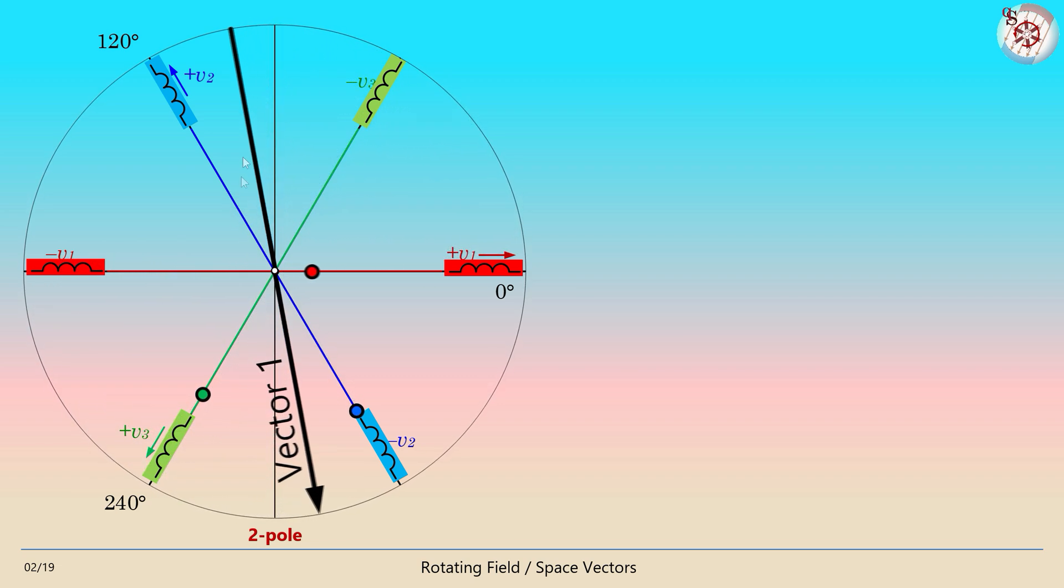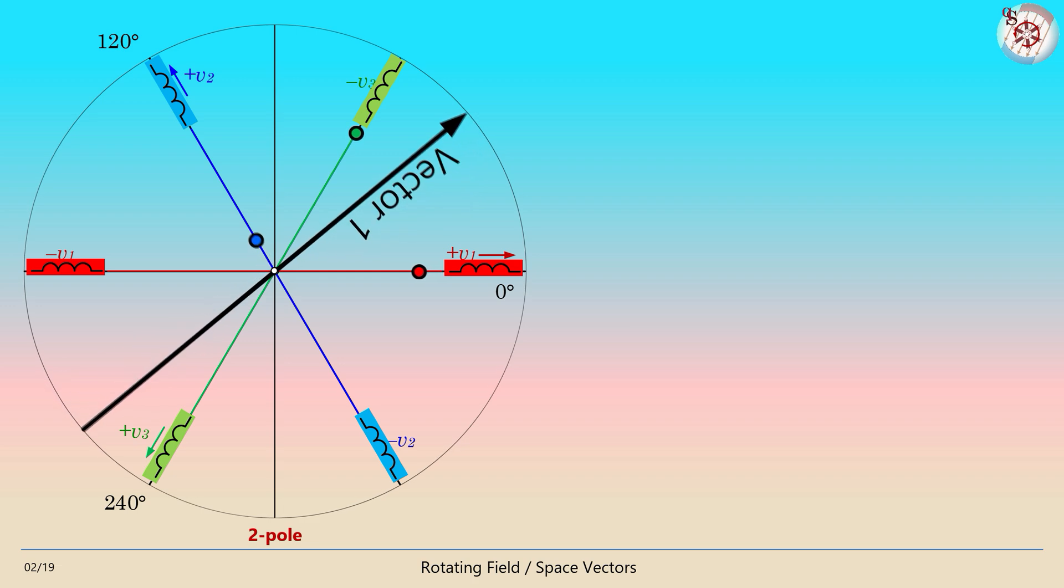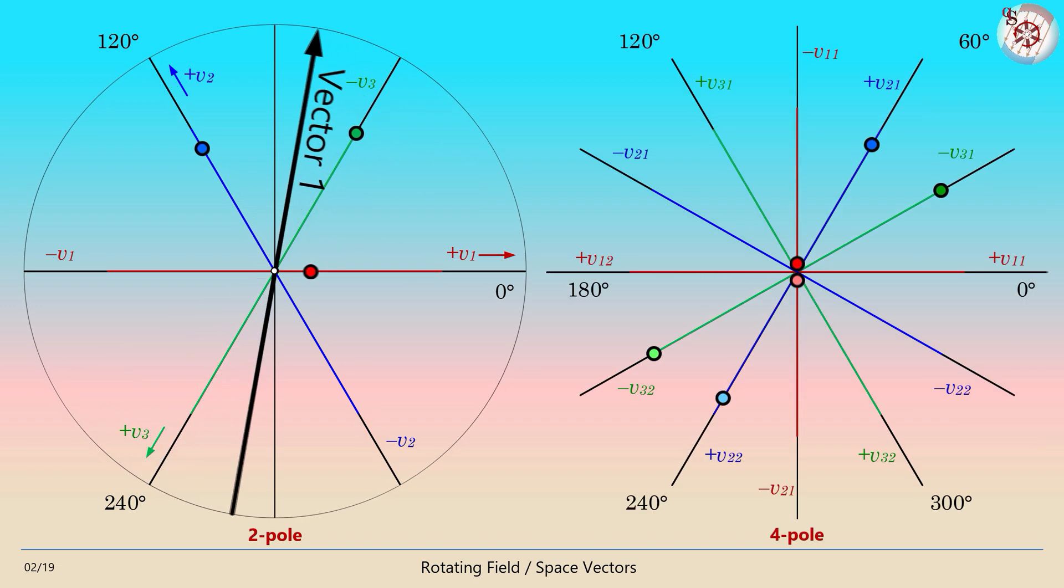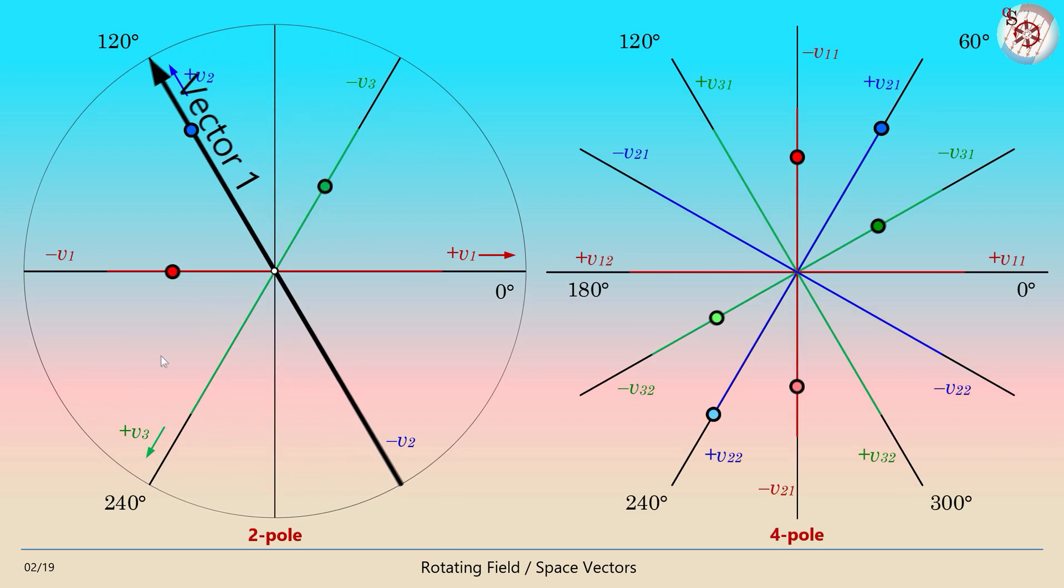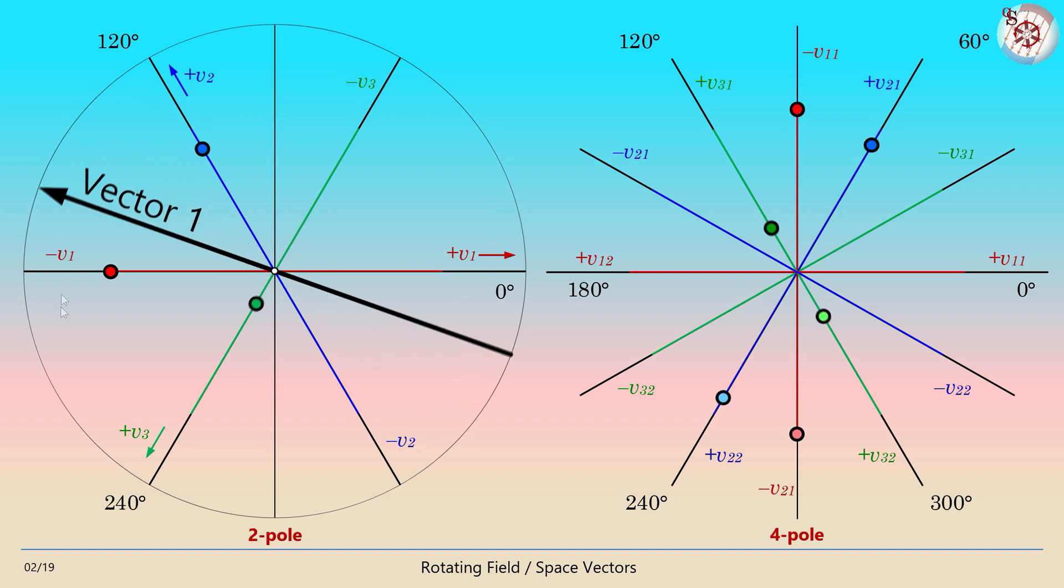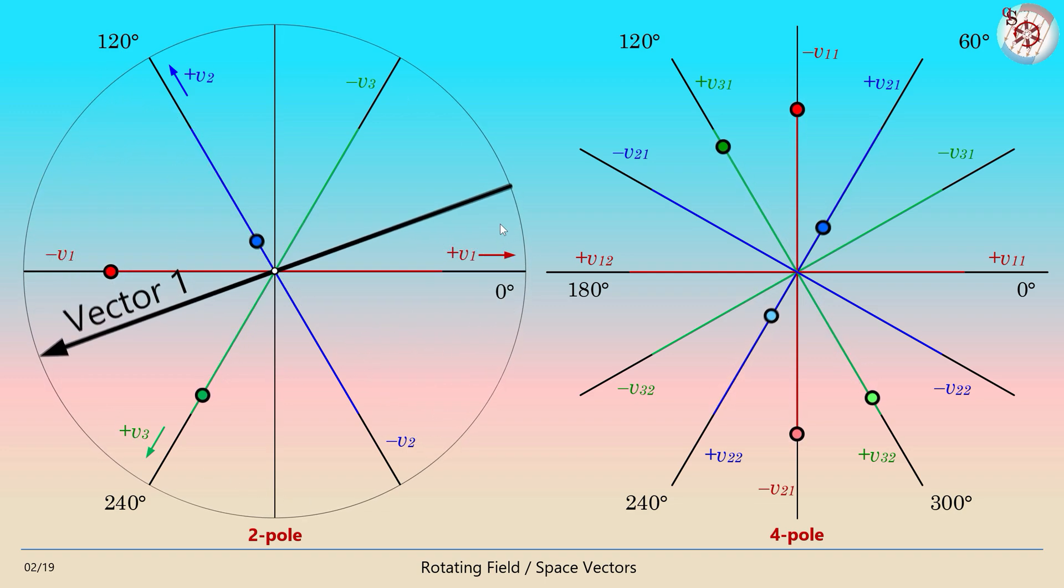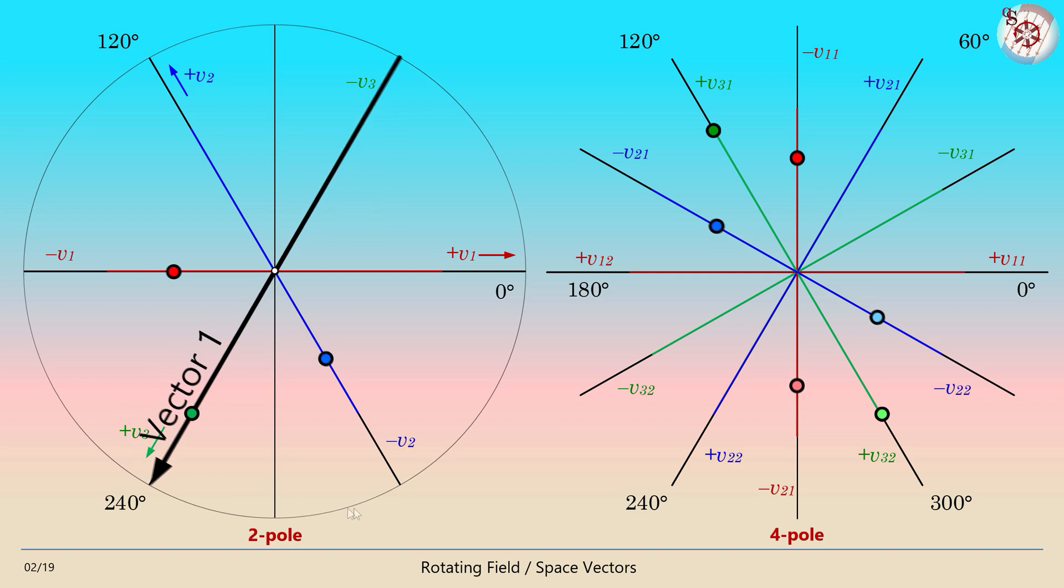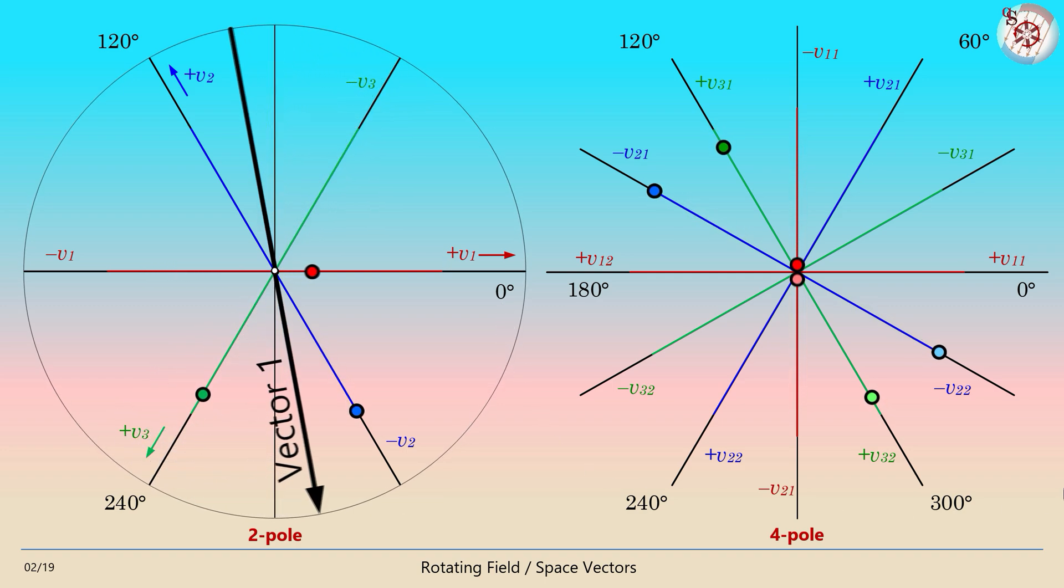What else can be done with those three voltages? The simplest case is to use them twice. Instead of distributing the three phases over an angle of 360 degrees, which is one full turn of the voltage space vector per mains voltage period, the three phases are placed over a total of only 180 degrees.